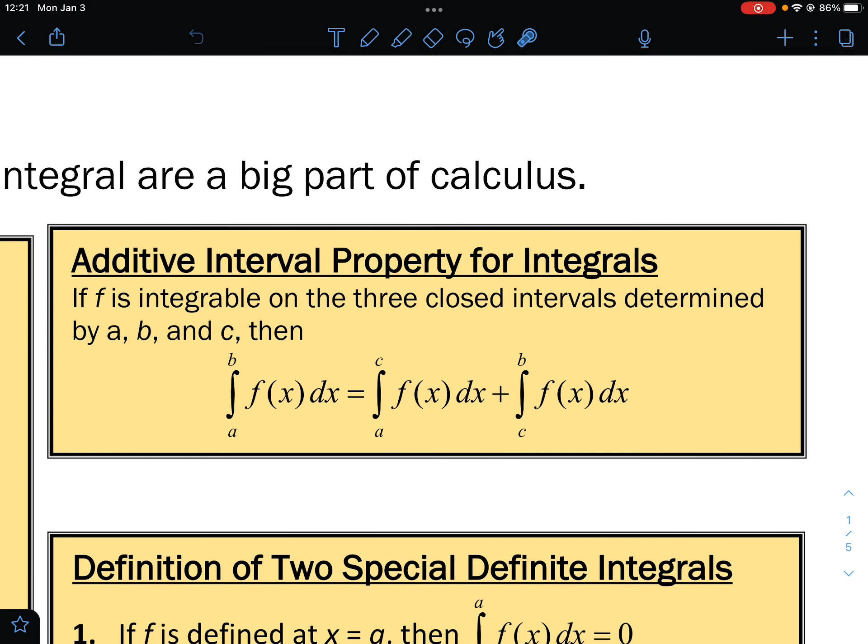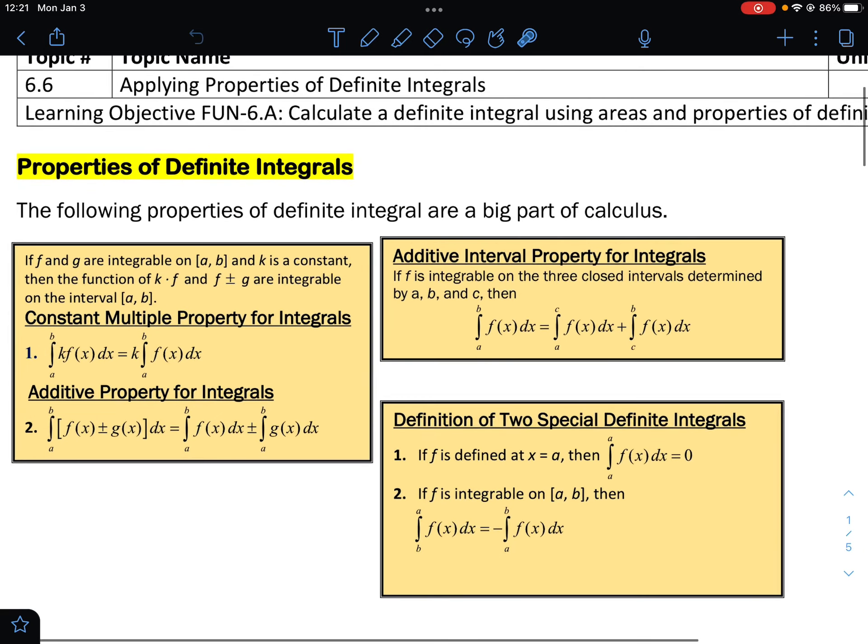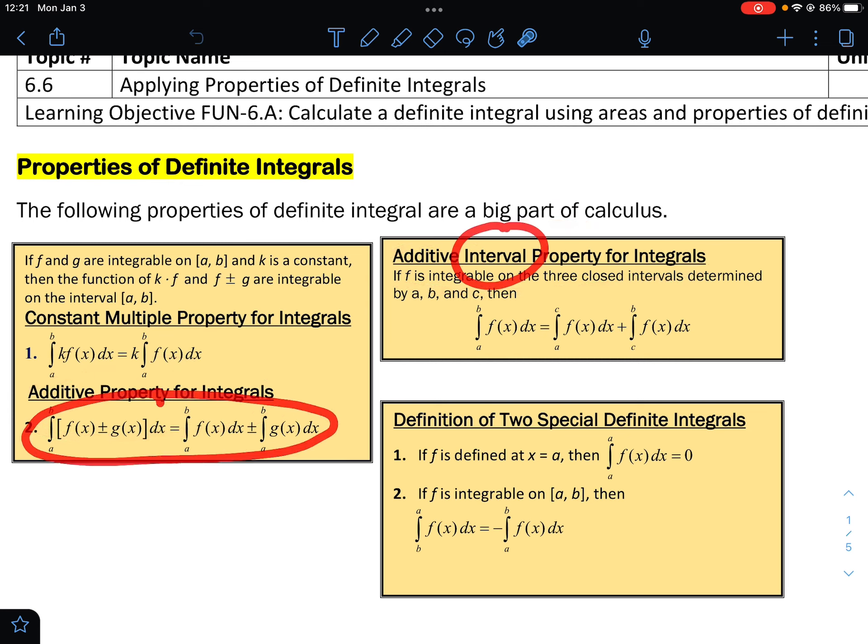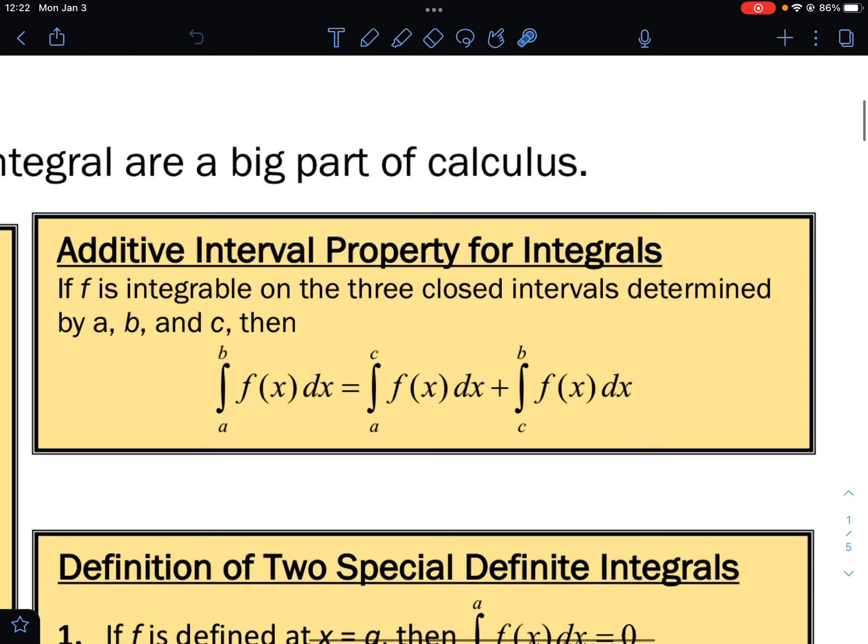The additive interval property for integrals. This one kind of gets confused with the previous one. It's the same name except the interval is added in there. This one is when you have two or three or four functions. This one is when you have one function. We're going to split that up into two separate parts.